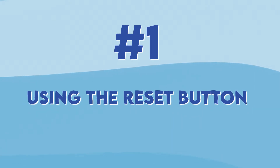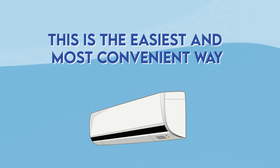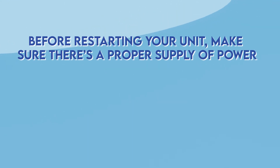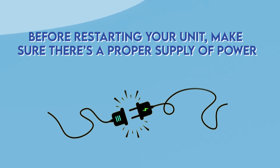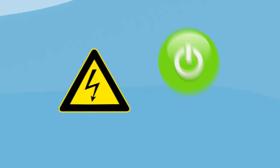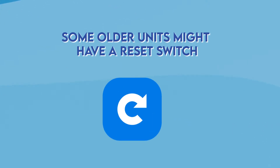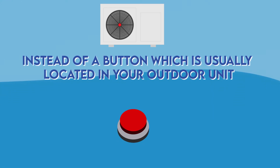First, using the reset button. This is the easiest and most convenient way to reset any AC. However, before resetting your unit, make sure there is a proper supply of power. You should never reset your air conditioner if there is not enough power to turn it on again. Some older units might have a reset switch instead of a button, which is usually located on your outdoor unit.